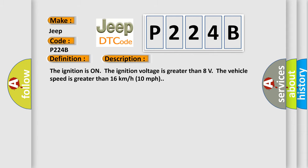The ignition is on. The ignition voltage is greater than 8 volts. The vehicle speed is greater than 16 kilometers per hour, 10 miles per hour.